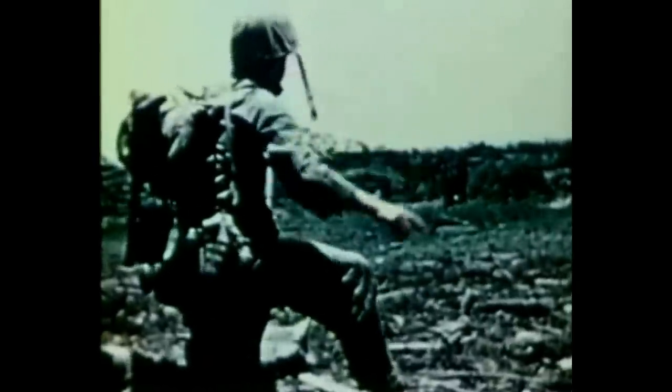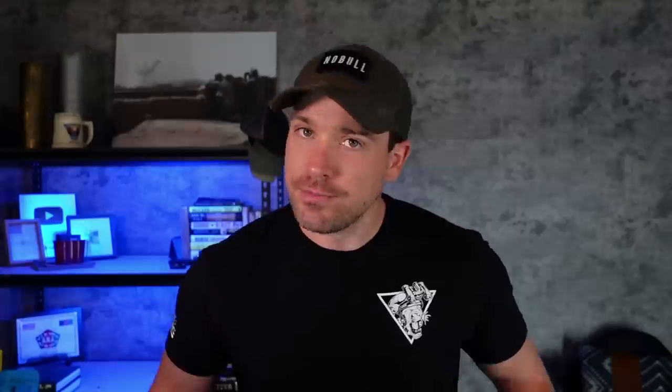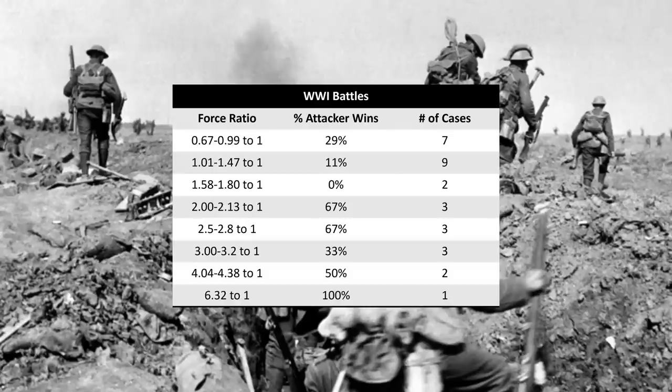We've got historical data on division-sized battles from World War I, World War II, and Desert Storm, put together by Christopher Lawrence of the Dupuy Institute, so let's see if that 3-to-1 ratio holds. This data is at the division level — roughly 15,000 or more per side — rather than squad-to-battalion level, since that detailed data simply doesn't exist. In World War I, it's all over the place: the attacker won 67% of the time when they had a 2-to-2.8-to-1 ratio, but only 50% of the time when they had a 4-to-4.38-to-1 ratio.